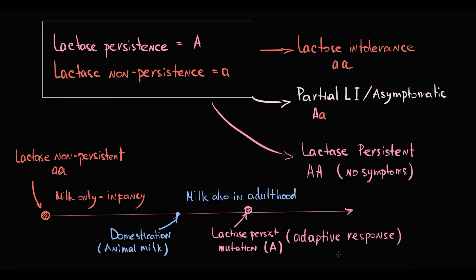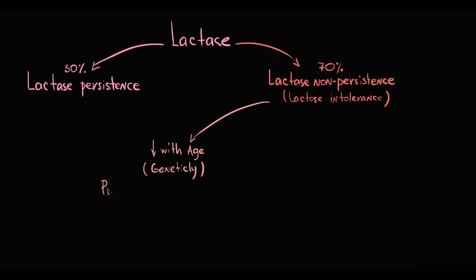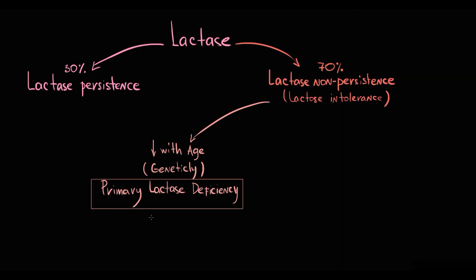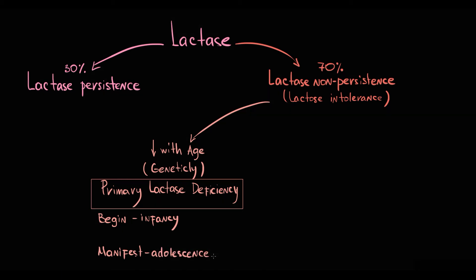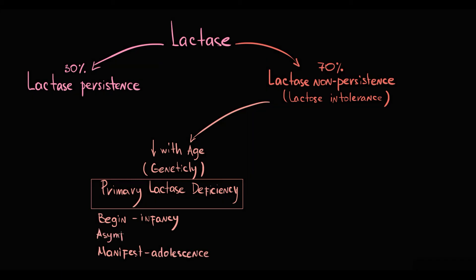This gradual decline in lactase activity with age is called primary lactase deficiency. Because this decline occurs very slowly — beginning in infancy but clinically manifesting only in adolescence — in primary lactase deficiency there is a very long asymptomatic time period.